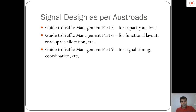Signal design in this case study has been based on the guidelines given in OSROADS. There are three manuals that detail the processes involved in signal design: Guide to Traffic Management Part 3, which mainly looks at capacity analysis; Part 6 for functional layout and road space allocation; and Part 9 for signal timing, coordination, etc.